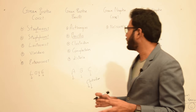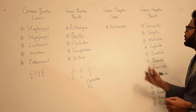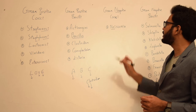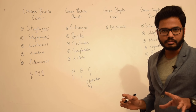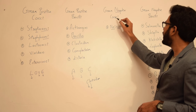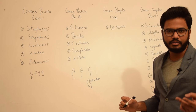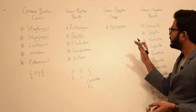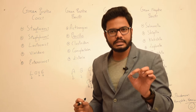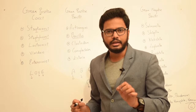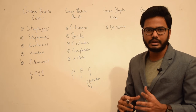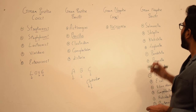Coming to gram negative cocci: Neisseria starts with 'Ne', which stands for negative, so you can remember it as a gram negative organism. For cocci versus bacilli — Neisseria has double letters: two C's in cocci and two S's in Neisseria. That's how you can remember Neisseria as a gram negative coccus.